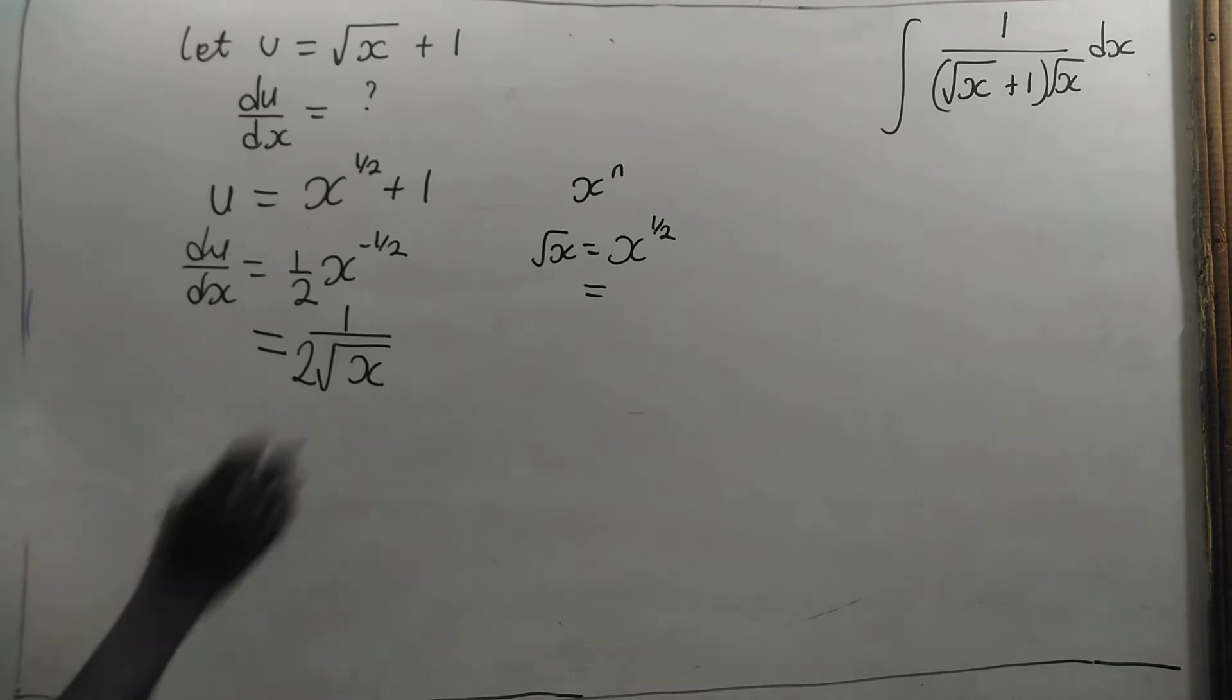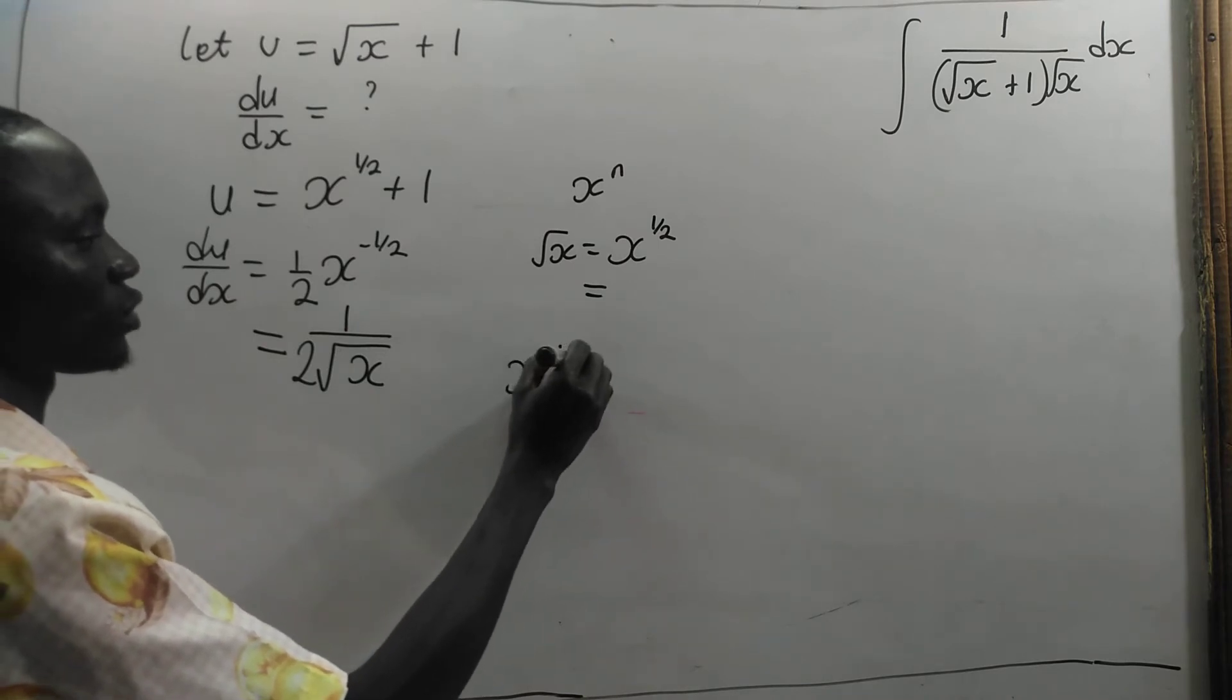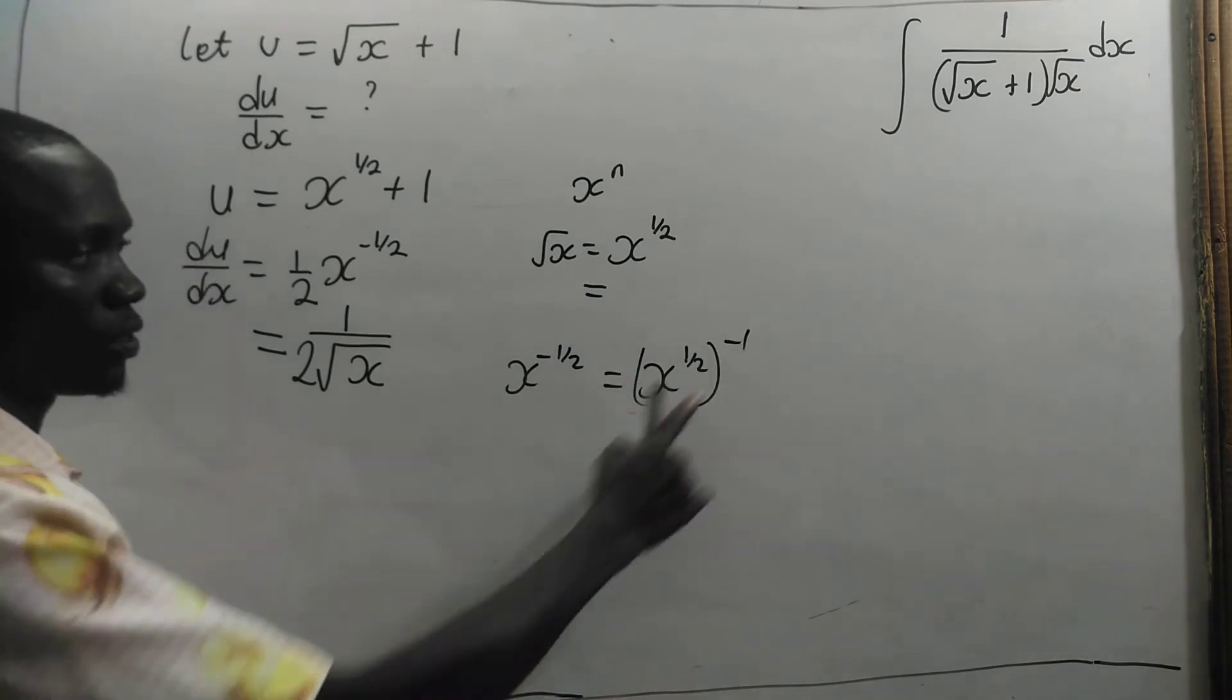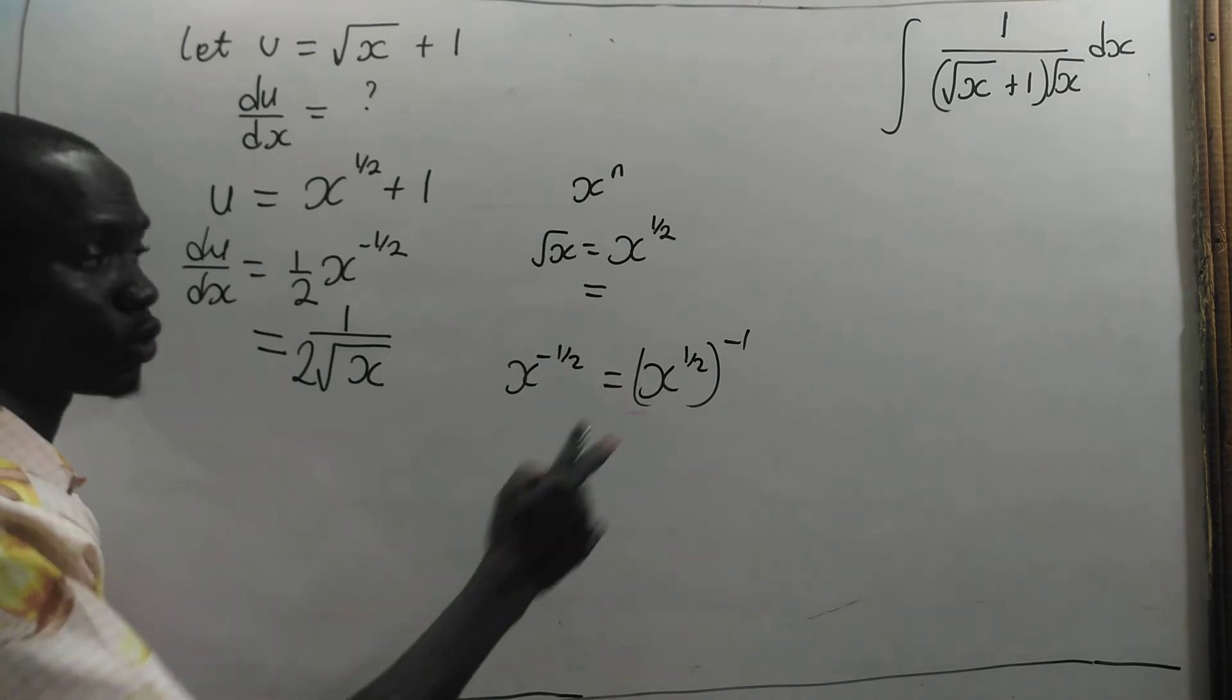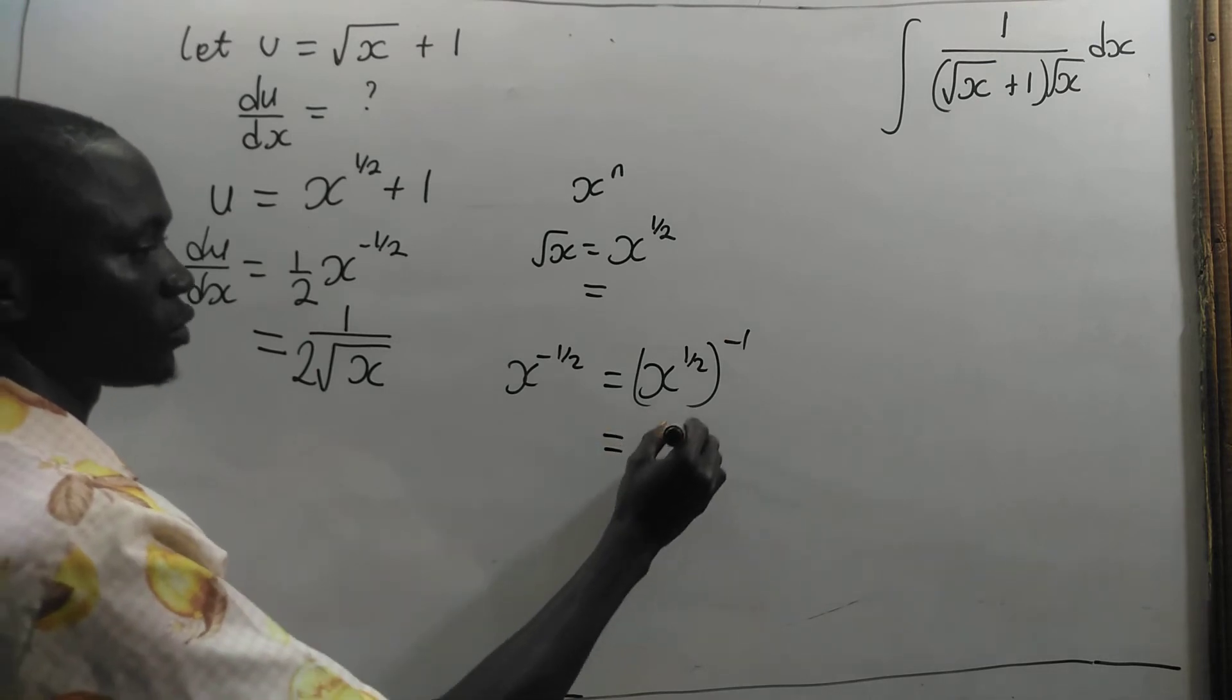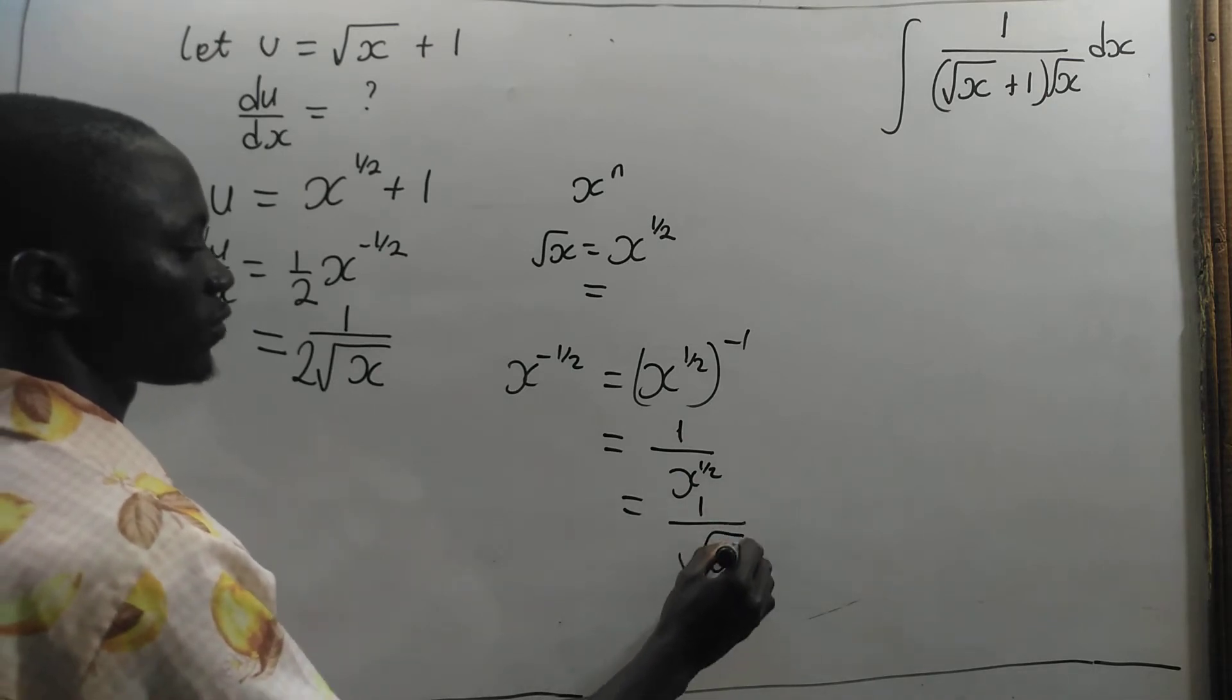But if you want to know how I did this, I have x to the power negative 1 out of 2. So I have x to the power 1 out of 2, and I'll bring negative 1 out. Negative 1 times half will give me negative half from the laws of exponents. That is to raise the power, multiplying the exponents. So this will give me 1 divided by x to the power half, and that is 1 on square root of x.